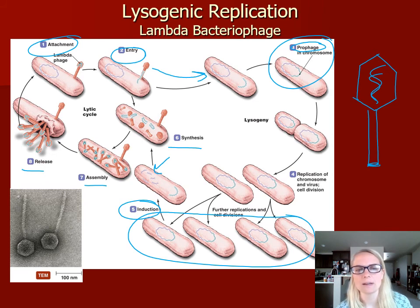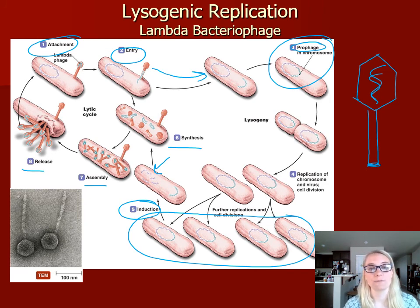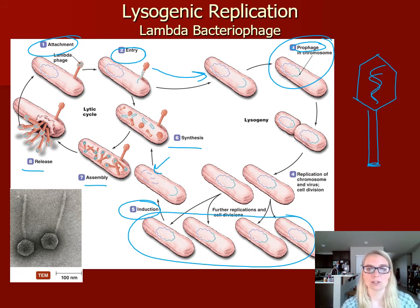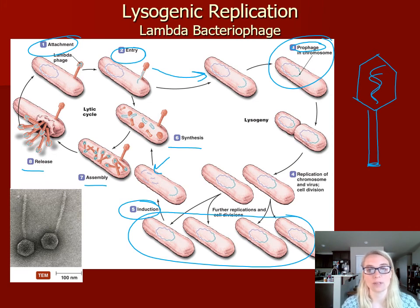So those are our two cycles of bacteriophage replication: the lytic, which is a quick infection and burst, and the lysogenic, which is a slower dormant phase that eventually results in bursting of the host cell once induction takes place.